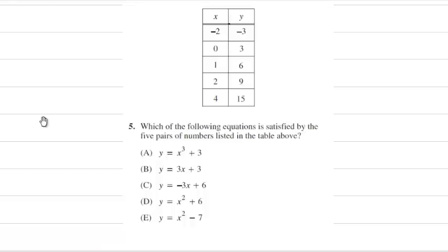If I take choice A and plug in, choice A says that Y equals X to the third power plus 3. When I plug in X being negative 2, I should get Y being negative 3. Negative 2 to the third power plus 3 equals negative 8 plus 3, which is negative 5. We already know that A is not a viable choice because when we plugged in negative 2 for our X, we did not get negative 3 for our Y.